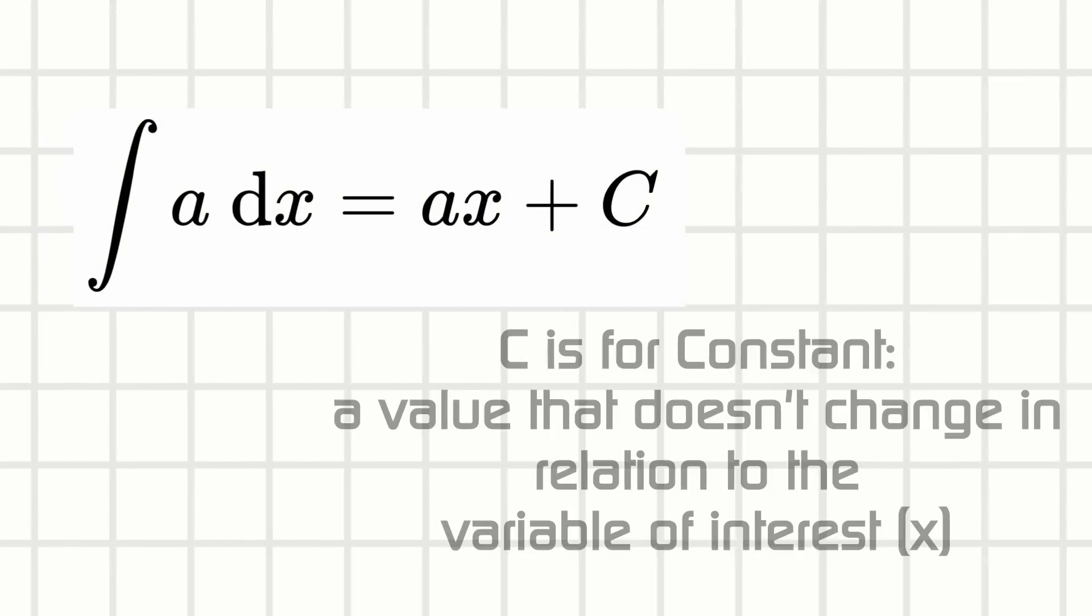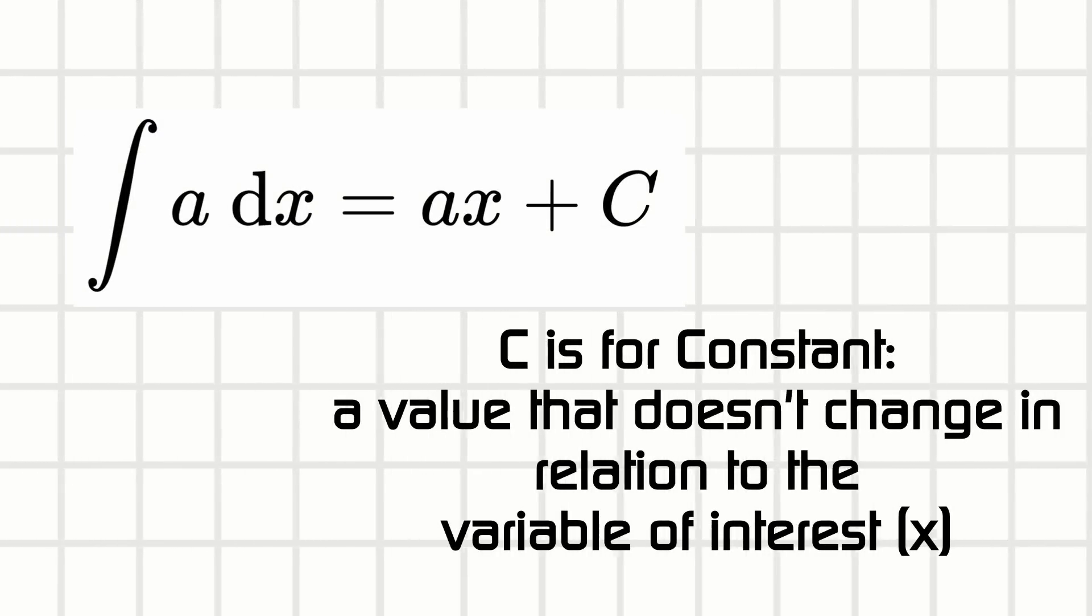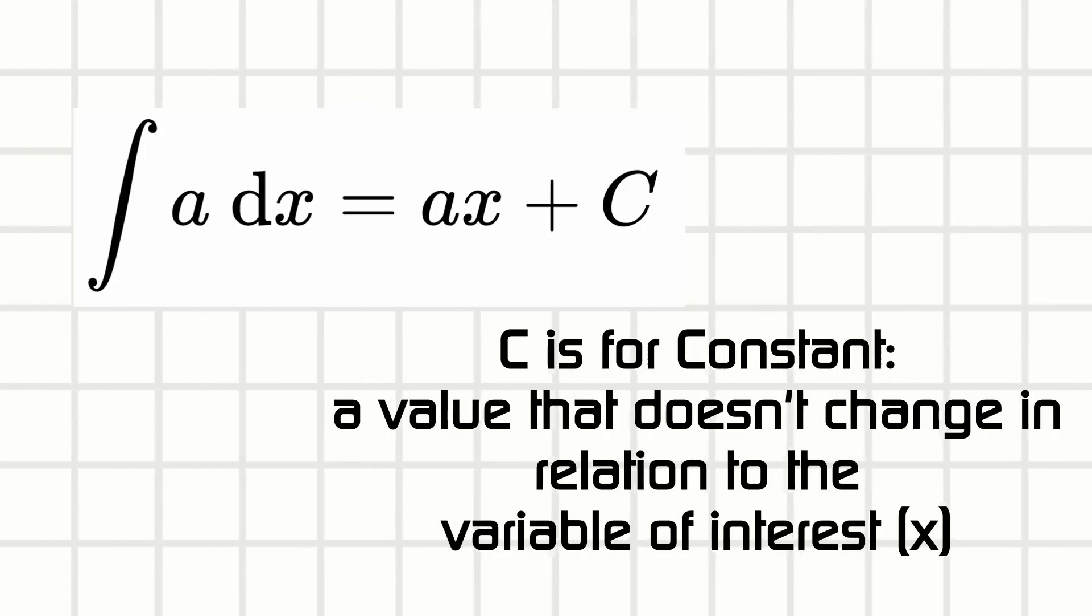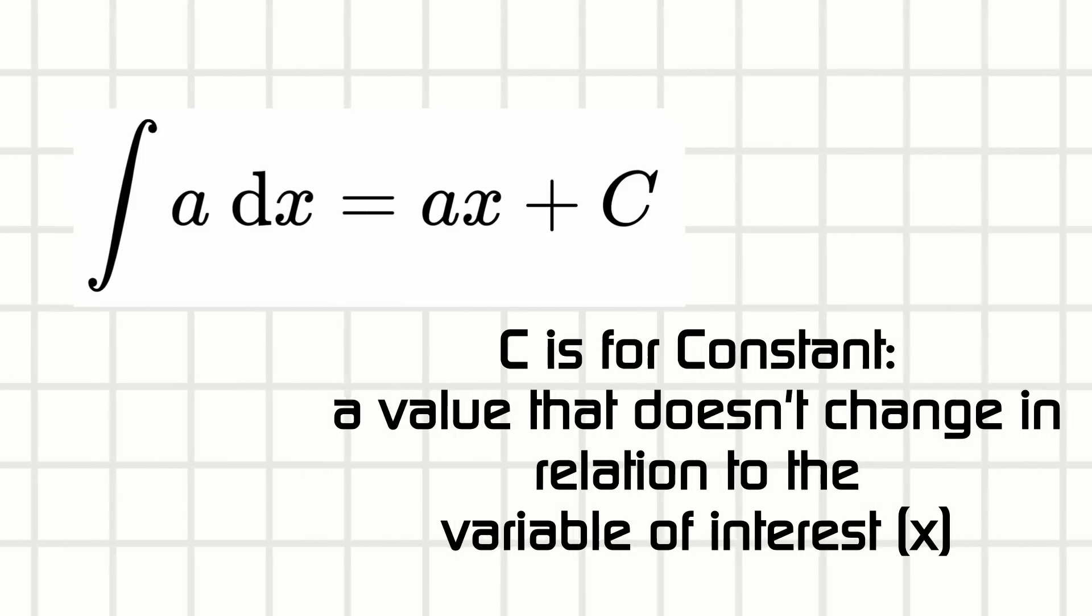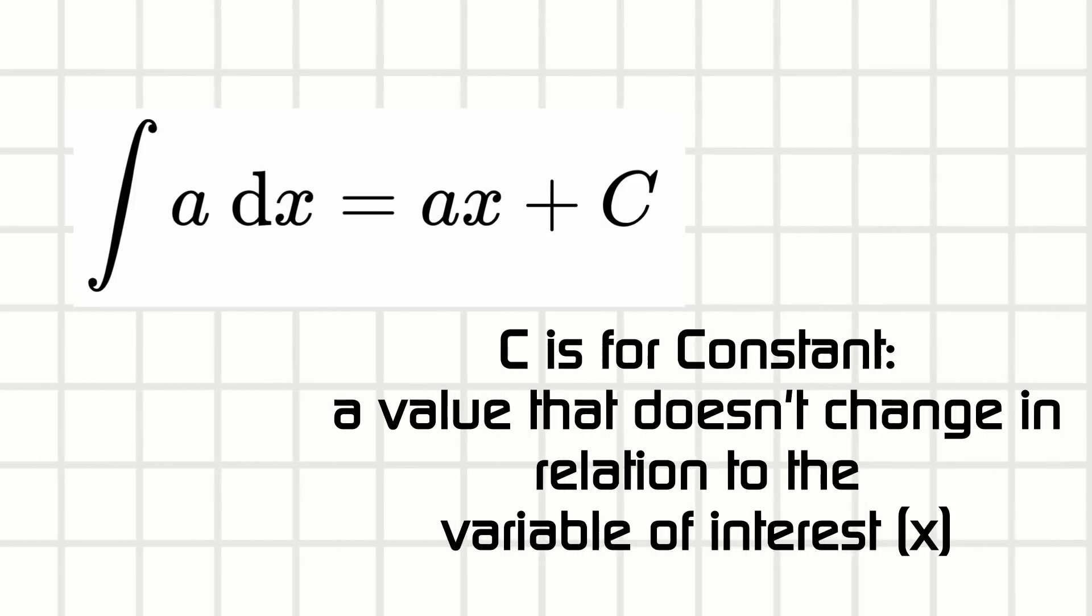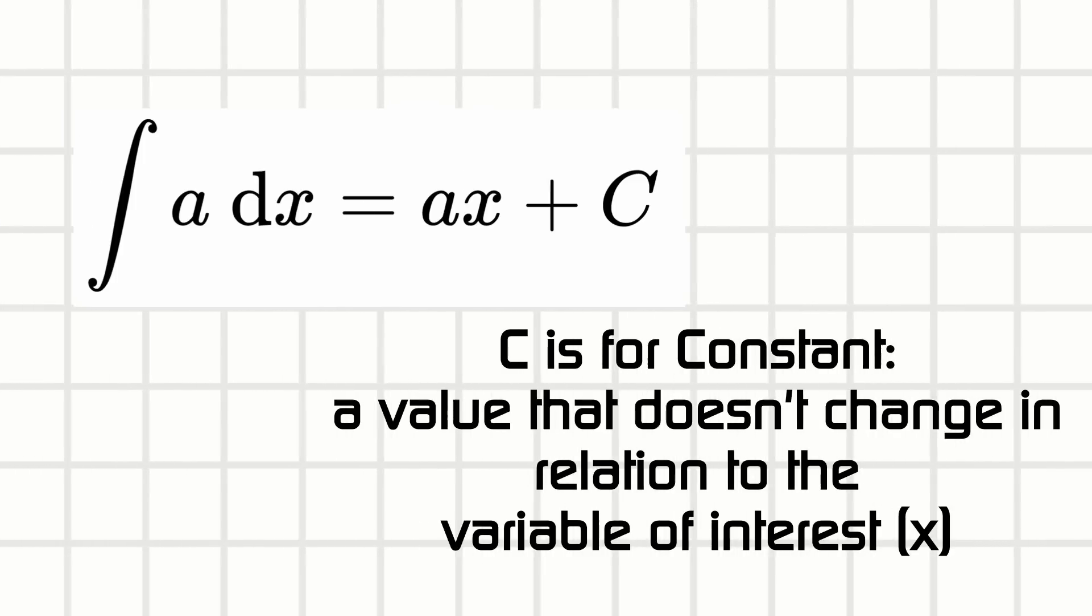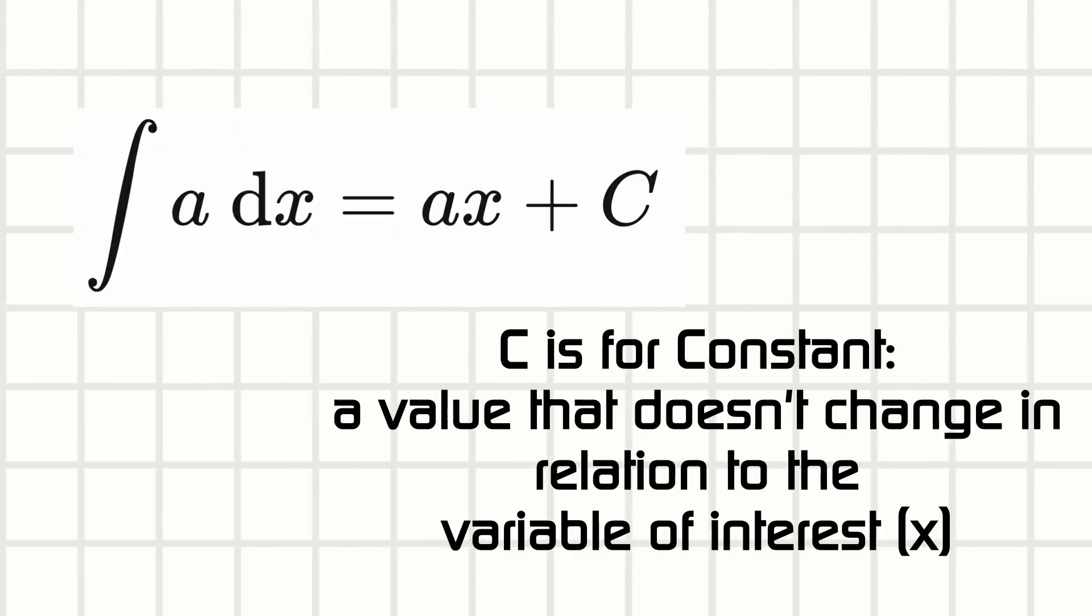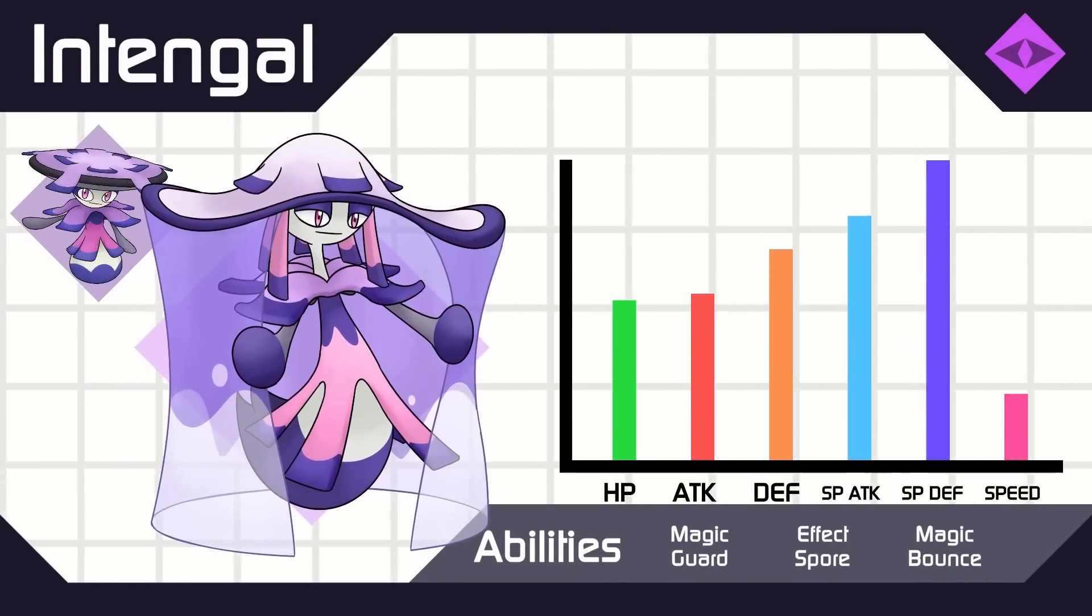Also, by the way, this plus C here, this constant here, is often added in indefinite integral because when you take the derivative of a constant, it just kaput goes to zero. So we don't actually know what constant it would have started at. It could have started at one, two, bajillion. That's why we just put in C. That's just kind of like the blank number.